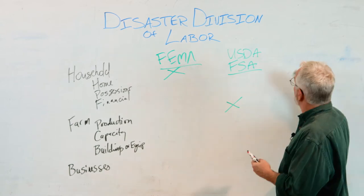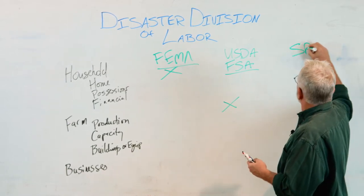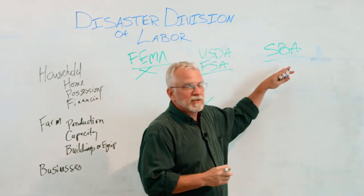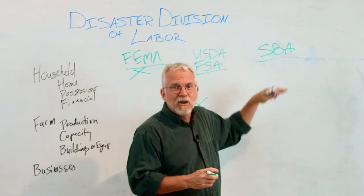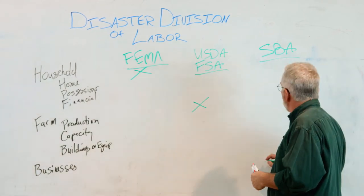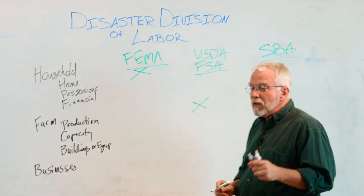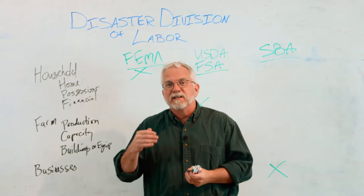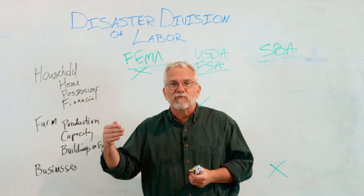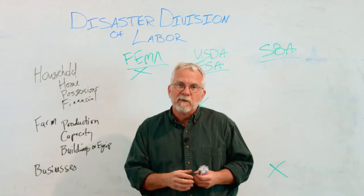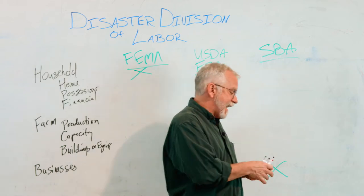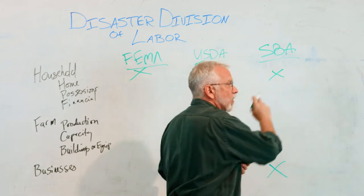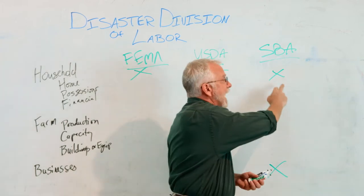The third agency is the Small Business Administration, or SBA. While obviously it works on the business aspect, SBA also has a guaranteed disaster recovery loan program for individual homes. So SBA does have home loans that can help deal with damages to the house.